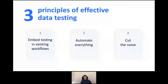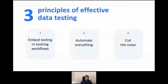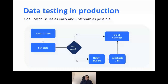The less you're reliant on humans to run something, the better. Third, cutting the noise: we are dealing today with really unprecedented complexity in terms of data sets and pipelines. The more tests we implement, the more noise we'll have — false positives and false negatives. So it's really important that we constantly evaluate our testing techniques and make sure we have the right signal-to-noise ratio.